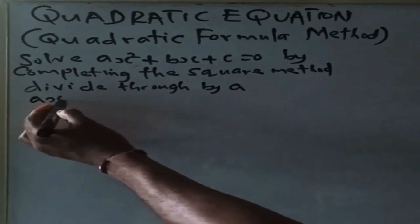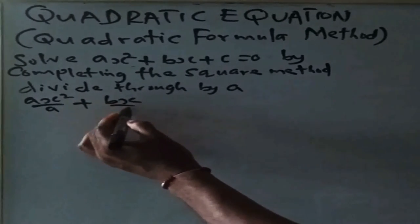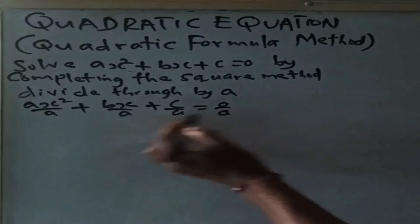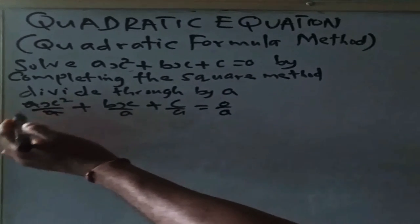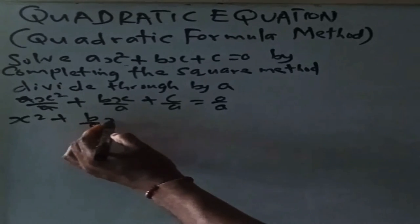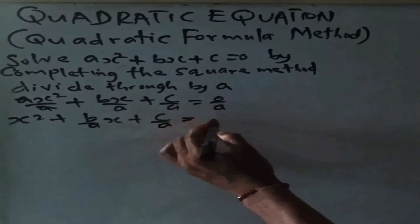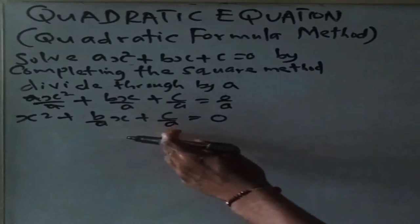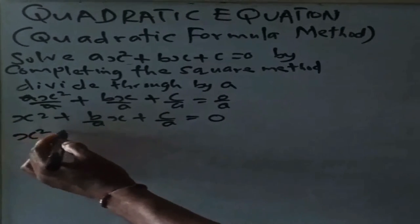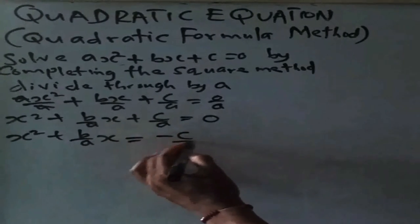So we have ax squared over a plus bx over a plus c over a equals zero over a. Dividing by a gives x squared plus b over a times x plus c over a equals zero. Step 2: transfer the constant term to the right hand side. So we have x squared plus b over a times x equals minus c over a.